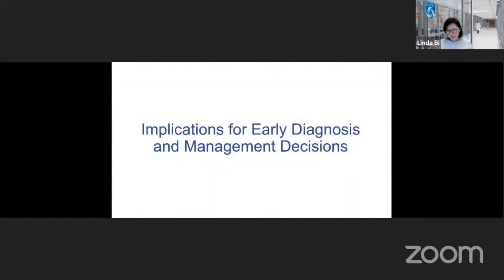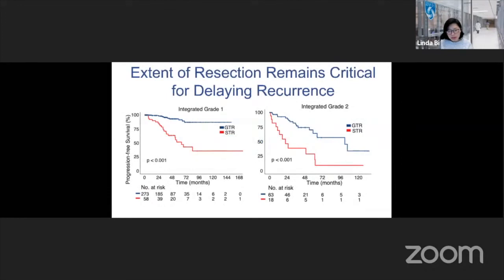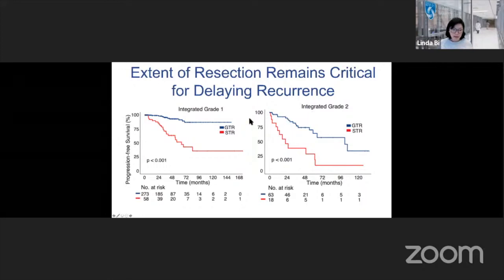What does this mean for diagnosis and management? Despite the power of biology, surgery remains one of the single most important things neurosurgeons can do to delay recurrence and potentially offer cure. Even after controlling for molecular biology, especially amongst the benign integrated grade 1 tumors, those with better resection still did far better than those with lesser resection over time. Biology does not replace the adequacy of treatment and especially surgery.